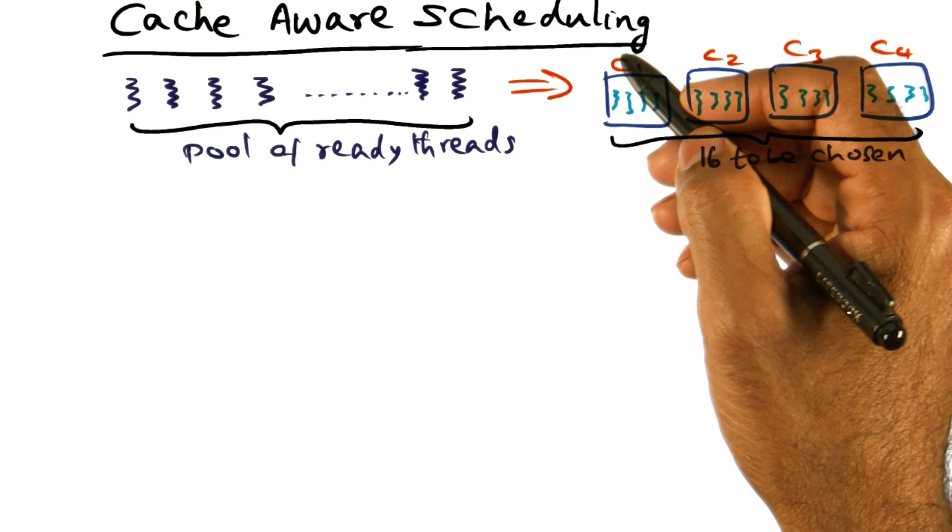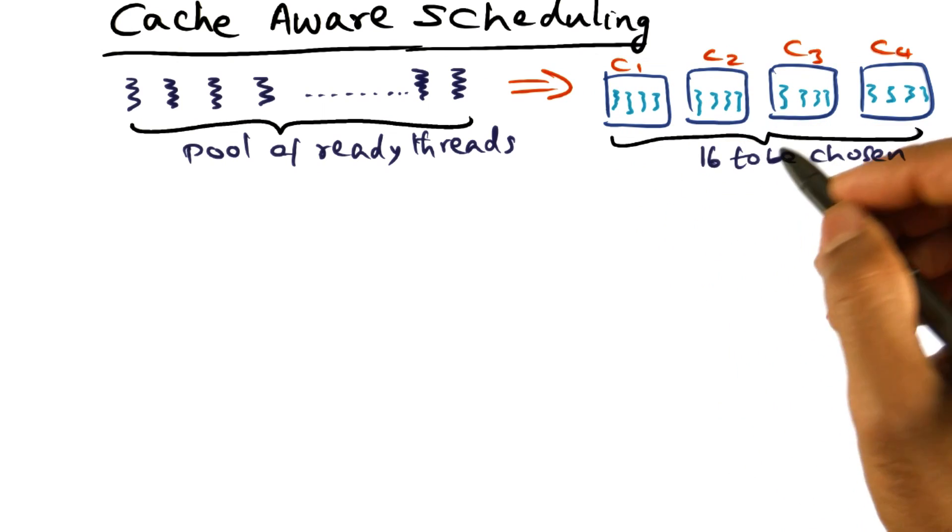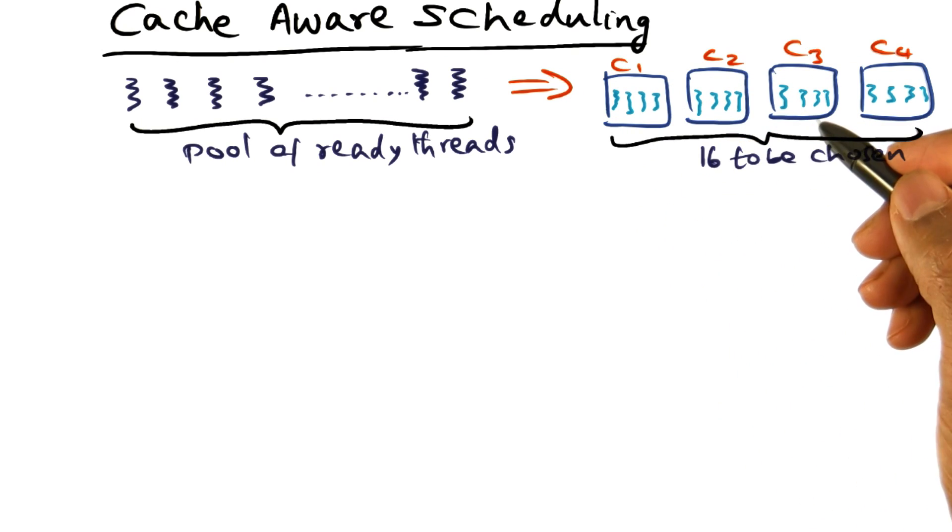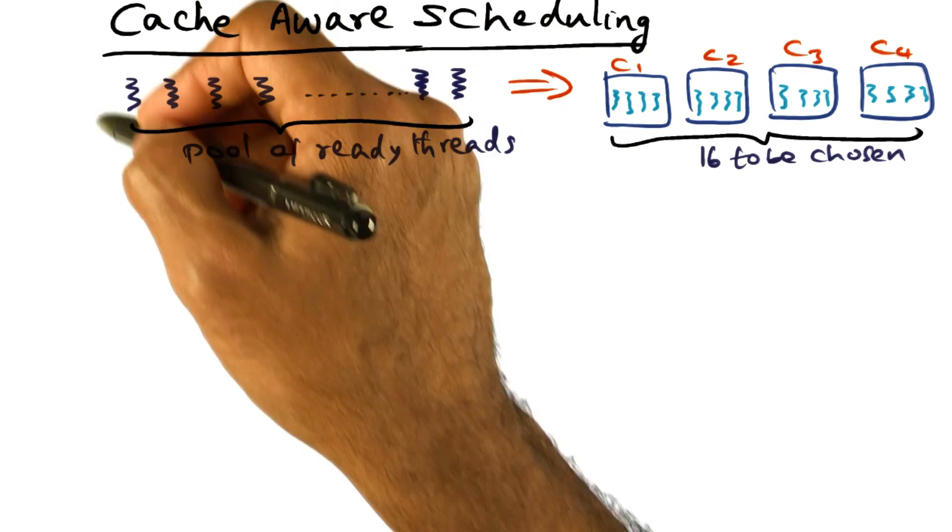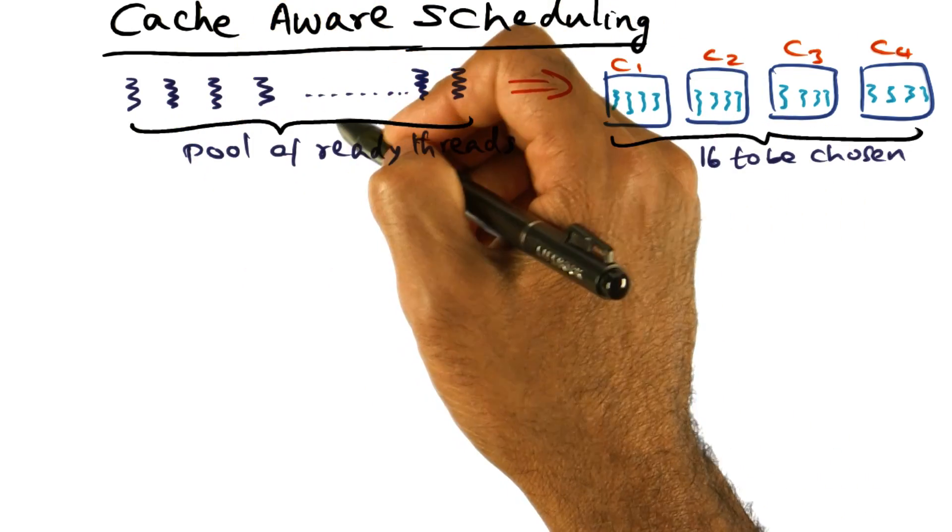Let me briefly introduce you to the idea of cache-aware scheduling when you have these multi-threaded, multi-core processors. To make things concrete, let's assume that you have a pool of ready threads. In this case, I'm going to tell you that the pool of ready threads I have is 32.